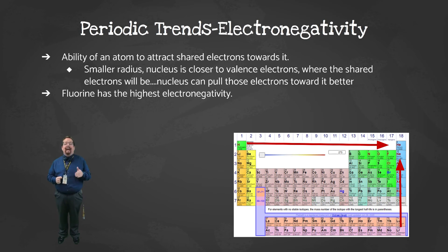Electronegativity is the ability of an atom to attract shared electrons toward it. This has a lot to do with Coulomb's law again. If the atom is smaller, fluorine being the smallest, the nucleus is closer to the electrons that it's sharing with another atom, and it can pull those electrons closer. Since fluorine is the smallest atom, it has the highest electronegativity.